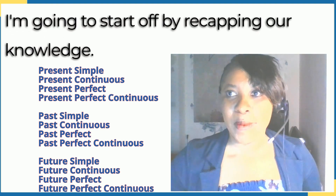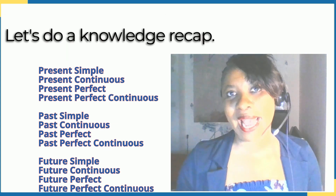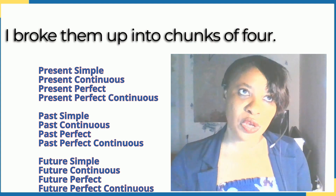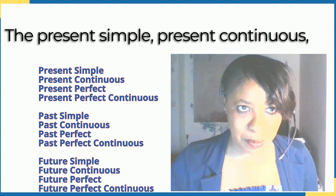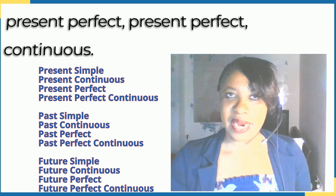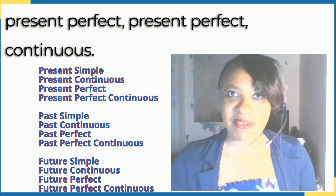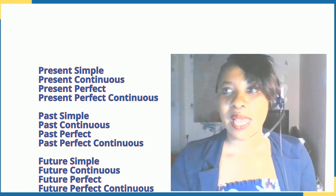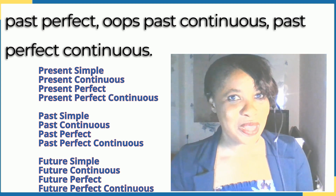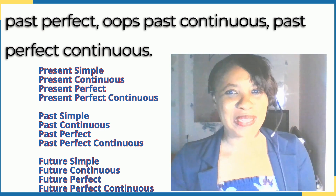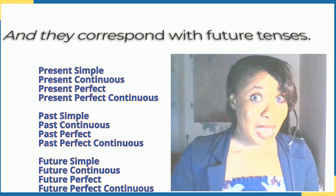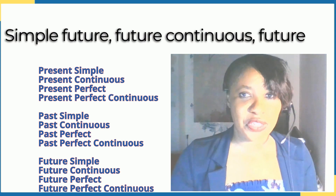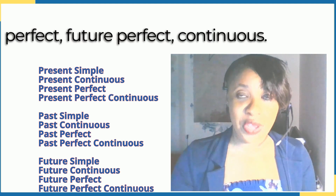I'm going to start by recapping our knowledge. I said there are 12 basic tenses, and I broke them up into chunks of four. The present simple, present continuous, present perfect, present perfect continuous. Then the past tenses: past simple, past continuous, past perfect, past perfect continuous. And they correspond with future tenses: simple future, future continuous, future perfect, future perfect continuous. We've also explored parts of speech.